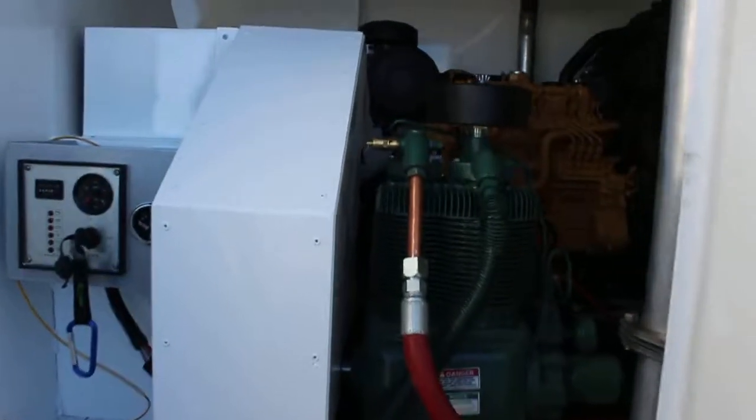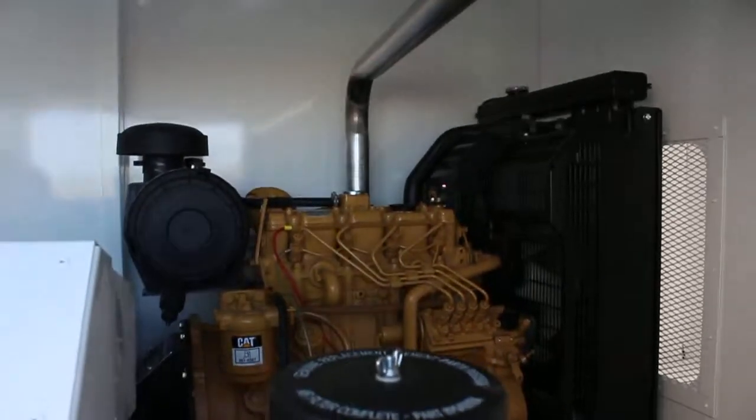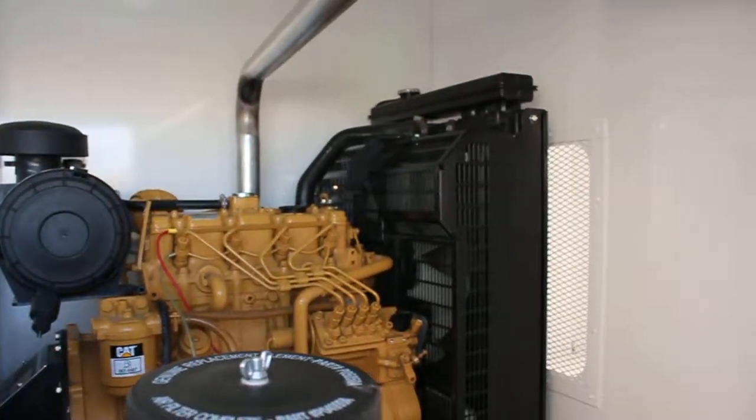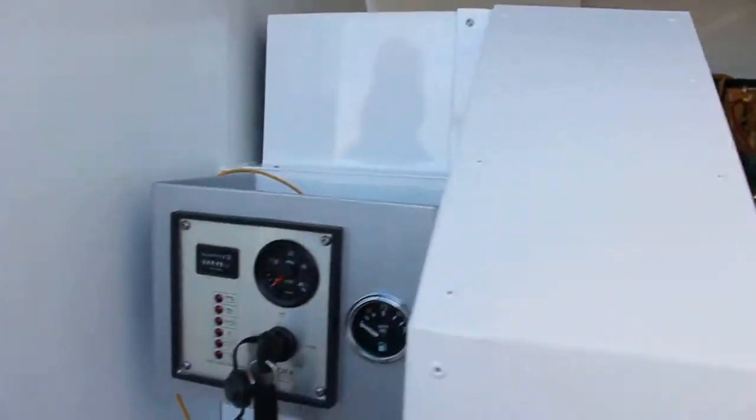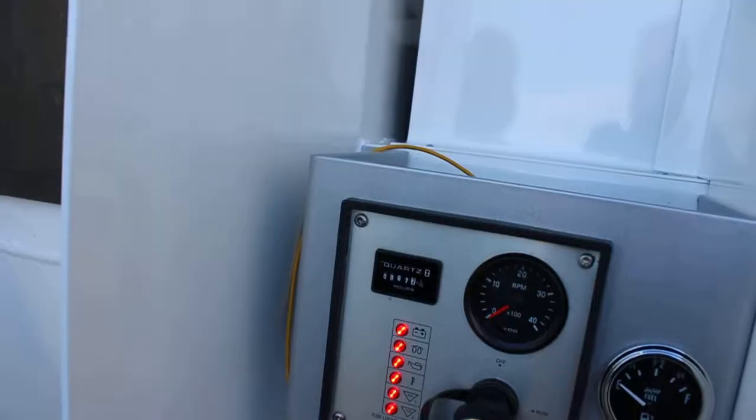Here we have the compressor head and the cat diesel engine turbo. It's all powered by a couple of pulleys. This is the key switch to turn it on. We've got the fan.